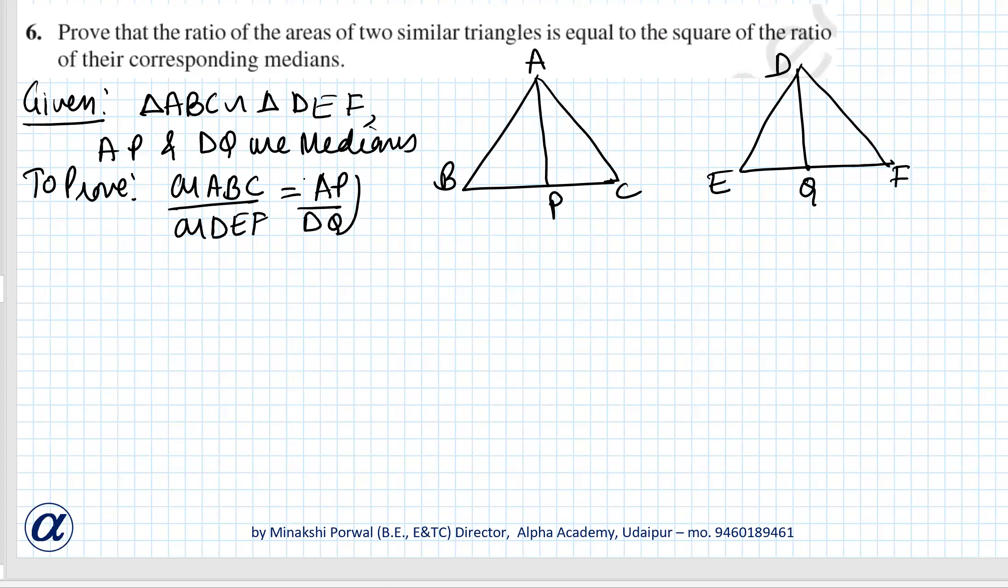Proof: By the ratio of area theorem, area of triangle ABC upon area of triangle DEF equals AB upon DE the whole square.